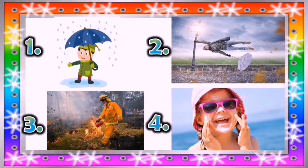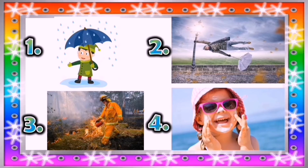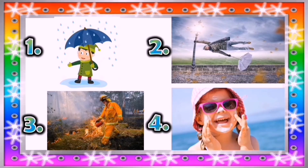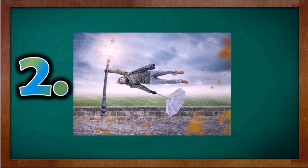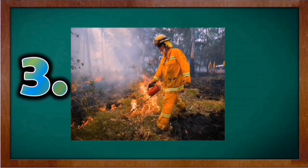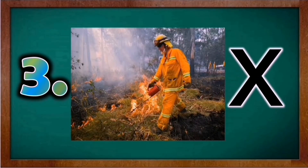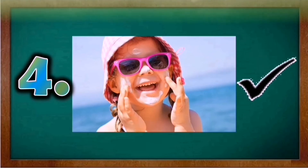Look at the pictures shown on your screen. Identify each picture whether it shows a safety precaution or not during sunny day, rainy day, and windy day. Get a sheet of paper and number your paper one to four. Put a check mark on a picture showing safety precaution and an X mark for a picture that does not. Picture one: check mark. Picture two: X mark. Picture three: X mark. Picture four: check mark. Well done, kids.